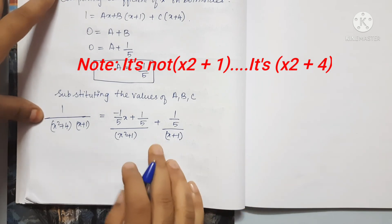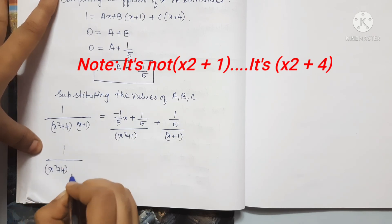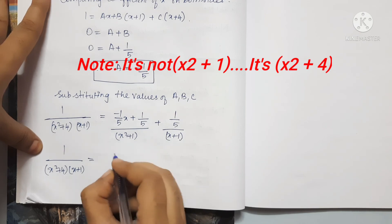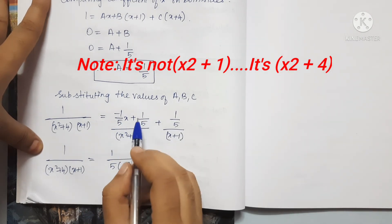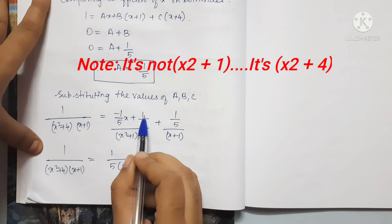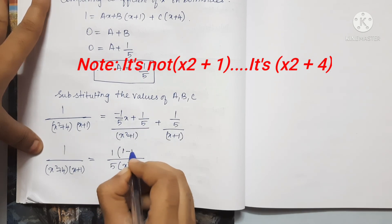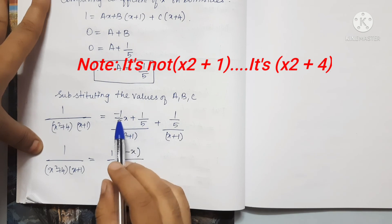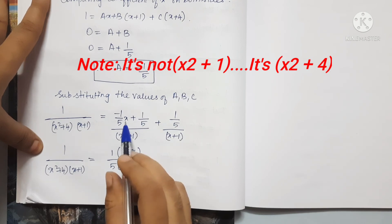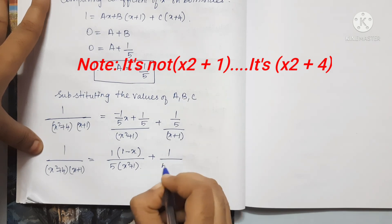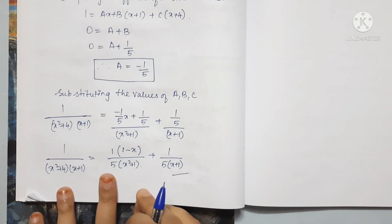We now substitute back to write the final answer: 1 divided by (x squared plus 4)(x plus 1) equals (minus x plus 1) divided by 5(x squared plus 4), plus 1 divided by 5(x plus 1). We can factor out 1/5 as a common factor.